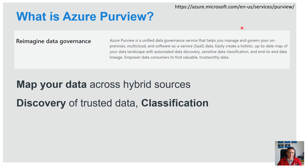It allows you to discover trusted data in your company with the inclusion of automatic classification. Purview scans and checks your data and applies stamps and hints — for example, identifying that there are email addresses, customer data, or product data stored, and so on.